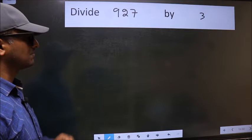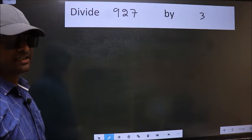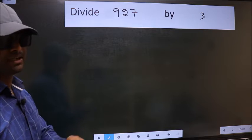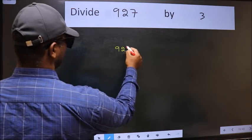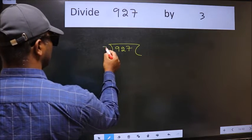Divide 9.27 by 3. To do this division, we should frame it in this way. 9.27 and 3 here.